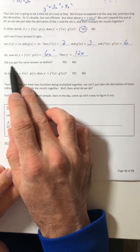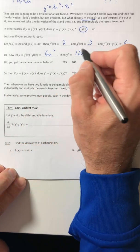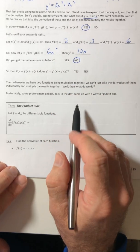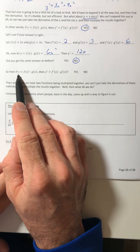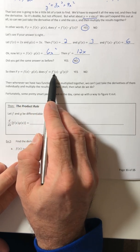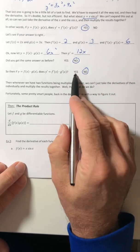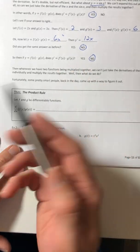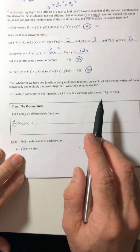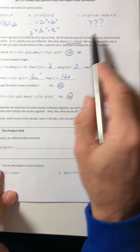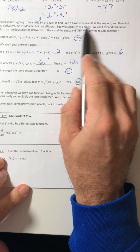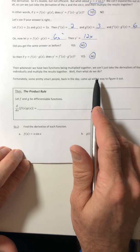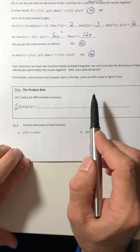So then the derivative of y would be 12x. So did I get the same answers before? So I got 6 and I got 12x. That's a big old no. So if y equals f times g, does y prime equal f prime times g prime? Well, no. If it was yes, then I should have gotten the same result both times, and I didn't. So whenever you have two functions being multiplied together, either like this or like x sine x, you can't just do the derivatives of both multiply them and call it a day.